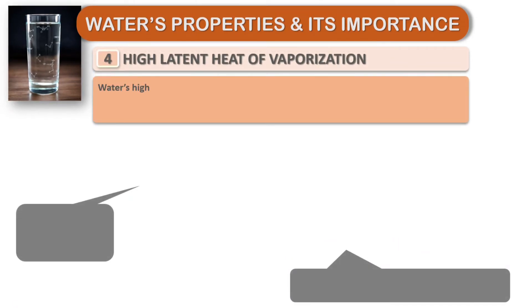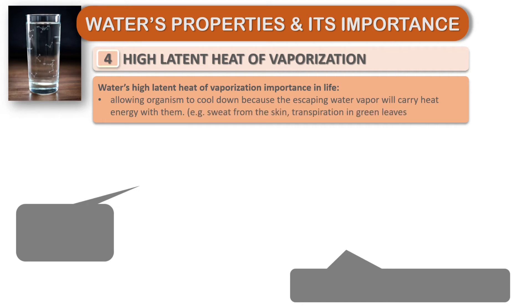Water's high latent heat of vaporization is important in life, allowing organisms to cool down because the escaping water vapor will carry heat energy with them. For example, sweat from the skin and transpiration in green leaves.